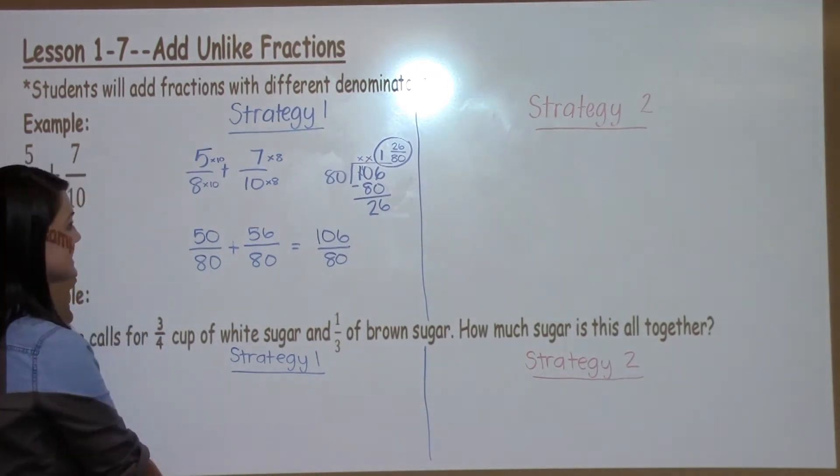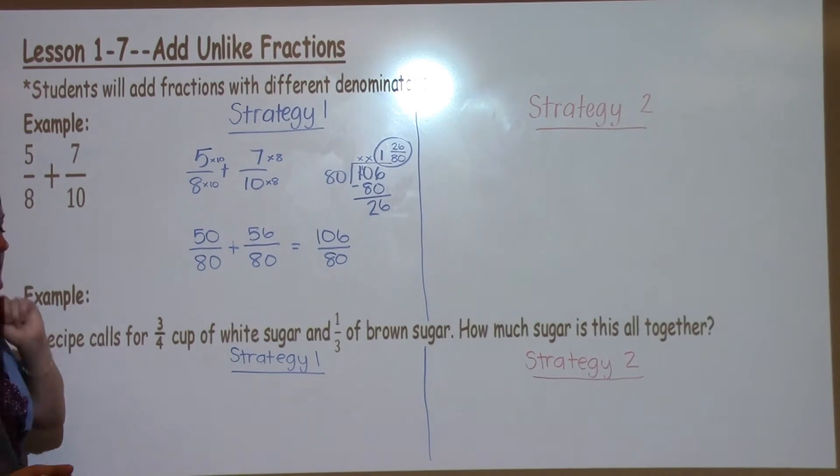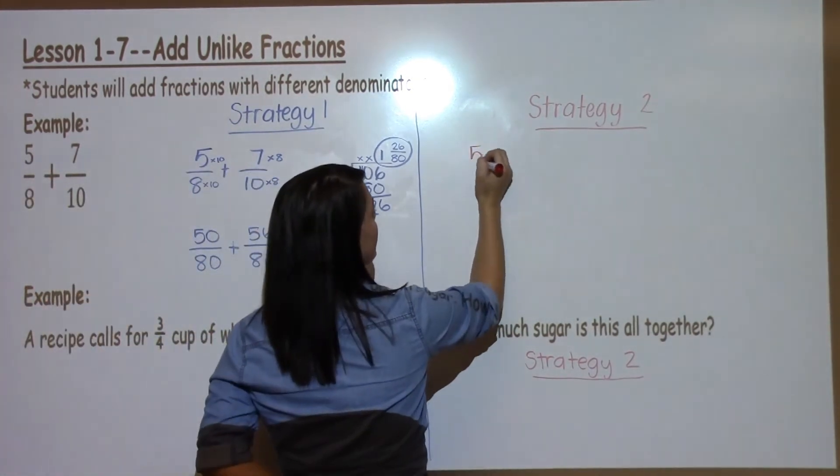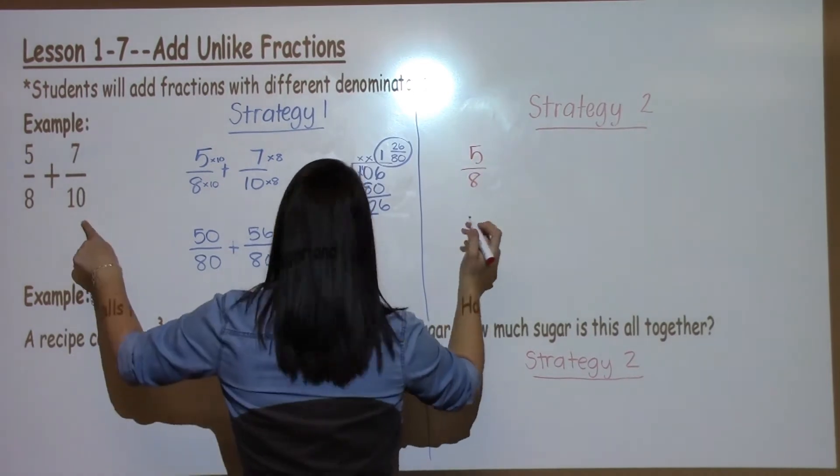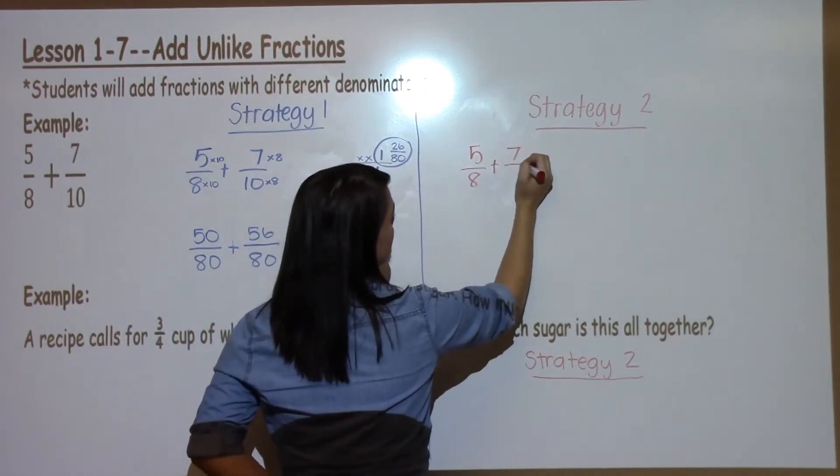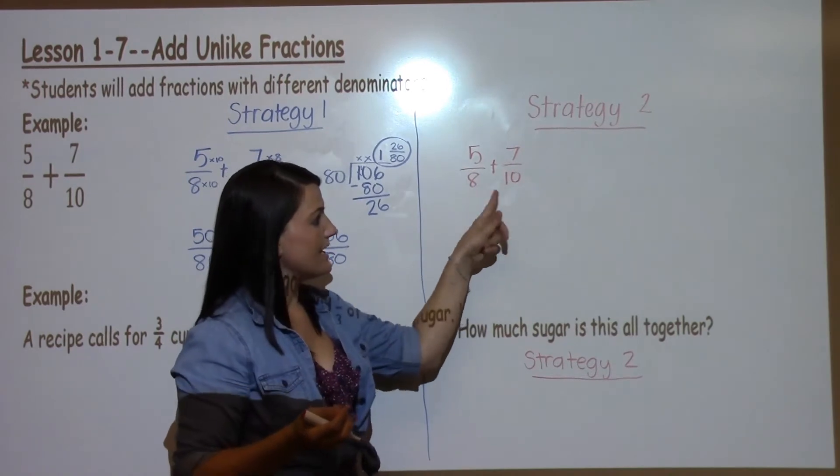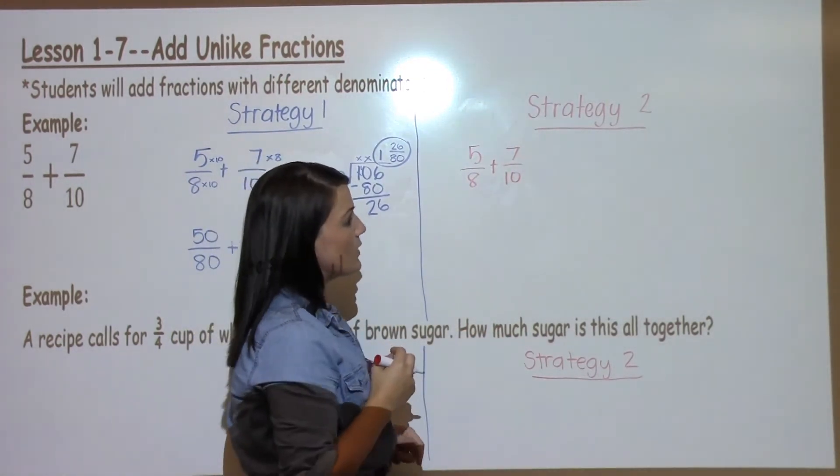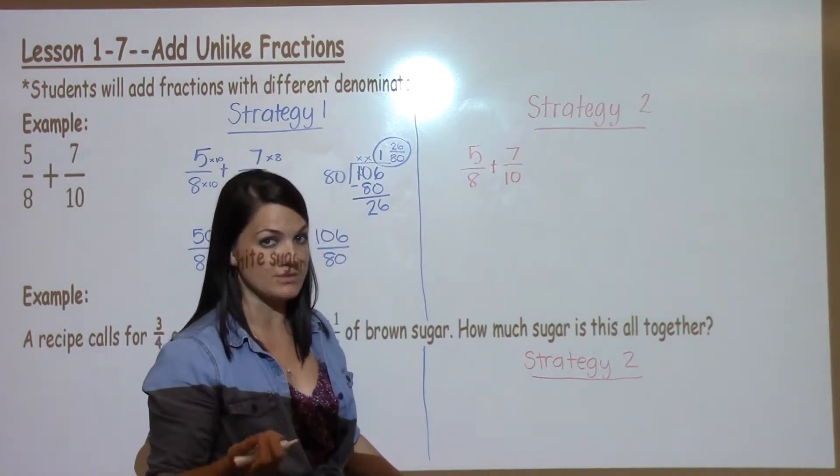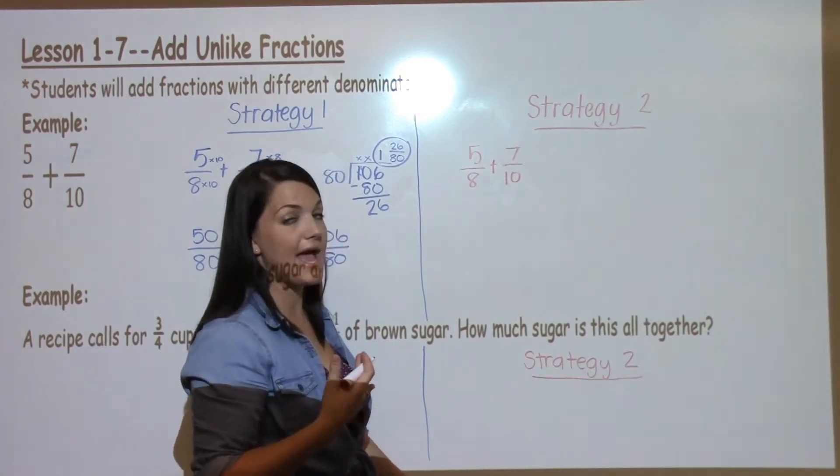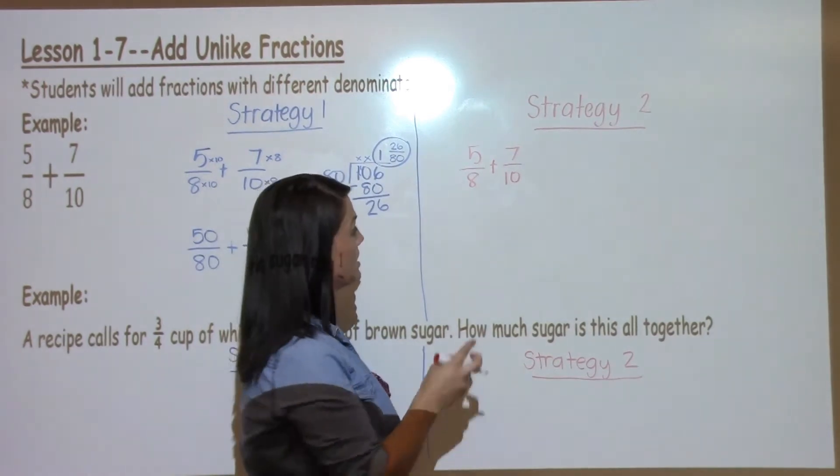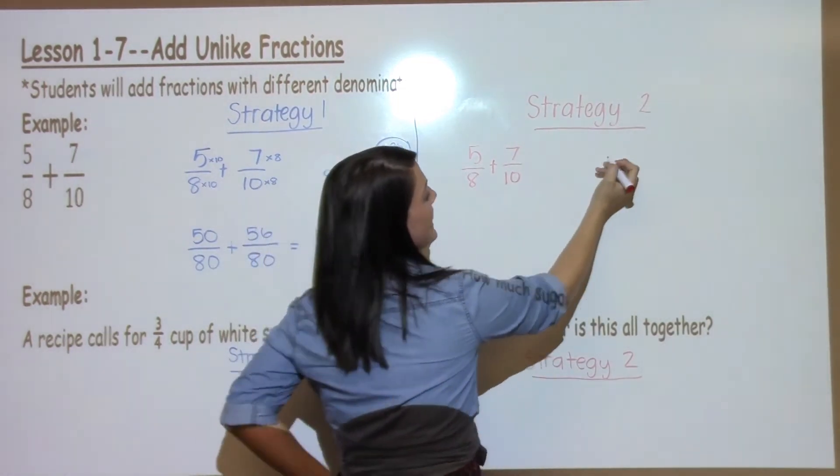Another way to do this exact same problem is by working with smaller numbers. So I'm again going to take 5/8 plus 7/10. Instead of multiplying the denominators by each other like I did in strategy 1, this time I'm going to look for their least common multiple. A multiple that they have in common that I could change both into to make them the same.